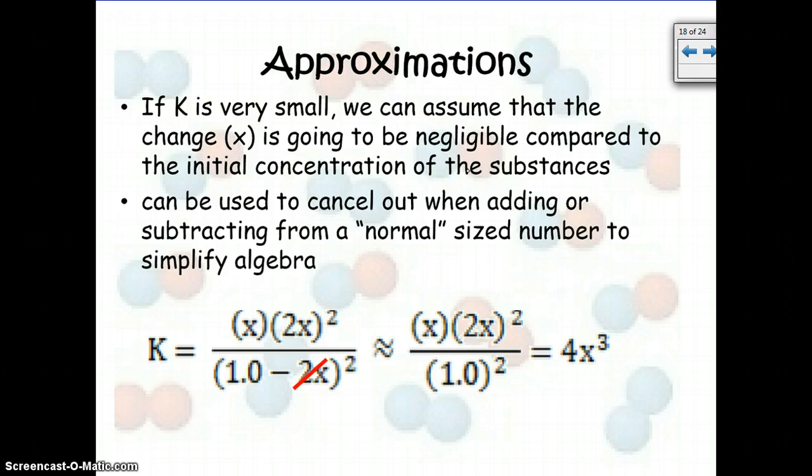So what this means is we can use this to cancel out when adding or subtracting from a normal size number in order to simplify the algebra. So you see here you have an example K, and you have 1 minus 2x, and then the whole thing is squared. Well, to solve this we would have to do x squared times x squared, and then on top we'd have an x cubed. So we'd be trying to solve cube root equations, which would require calculus. So that's probably not the best way to go for most people. So basically, if you have 1 minus something x, and you have a very small K, you can just cancel out the whatever x, and you'll just be stuck with 1 squared. It's just a way to simplify.